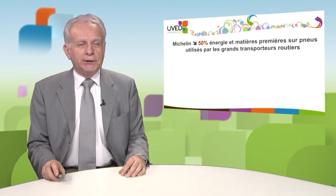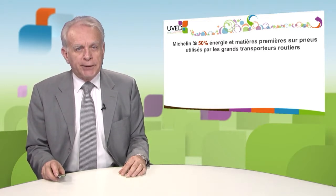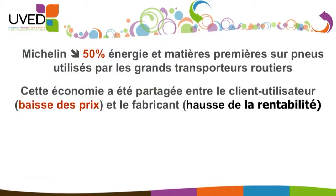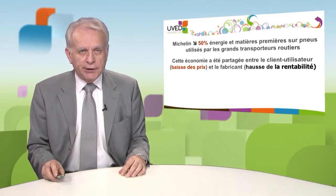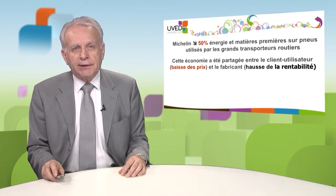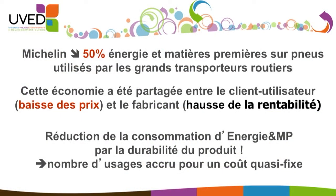Let's talk about Michelin — very much in the literature but not very much analyzed. Michelin decreased their use of raw material for tires used by major road transportation companies. This was accompanied by an increase in profitability for the manufacturer and a decrease in prices for users. In the economy of goods-selling, if a manufacturer increases prices by 10 percent and clients get a 10 percent discount, the manufacturer loses. Here we have a win-win possibility, because the energy and raw material item compensates for the others. The solution: make the product last, amortizing the fixed cost by using it more.